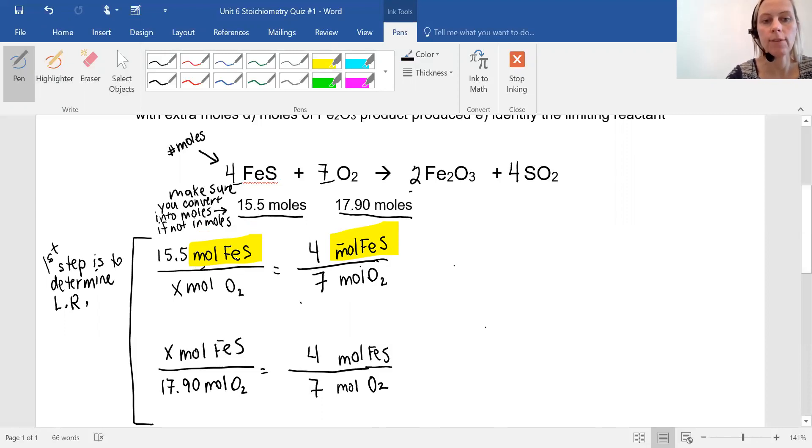So now calculating it, you just take in a proportion, you take that value, cross multiply and divide. So when you take 15.5 and multiply by seven, and then divide by four, you get 27.125 moles of oxygen. I'll do the same for the bottom portion 17.9 times four, divided by seven, and I get 10.228 moles of iron sulfide.